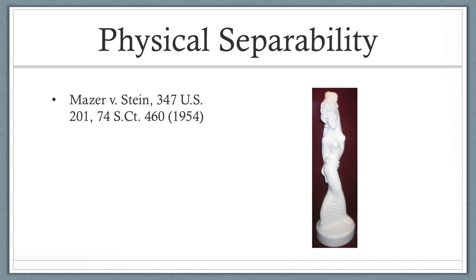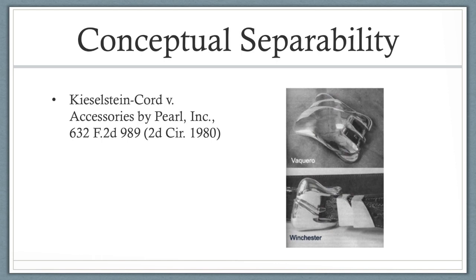An example of a useful article that was deemed copyrightable is a lamp base. In 1954, the U.S. Supreme Court held in Maser v. Stein that a decorative mass-produced lamp base could stand alone as a copyrightable work of art and was therefore eligible for copyright protection, notwithstanding that it served a utilitarian purpose as a lamp base. Artistic elements that are conceptually separable from the utilitarian aspects of the work may be copyrightable in some cases. Kisselstein Cord v. Accessories by Pearl, Inc. involved a high-end jeweler's design of two belt buckles featuring ornate sculptured designs cast in precious metals. The Second Circuit found that the conceptually separable elements were protected under copyright.